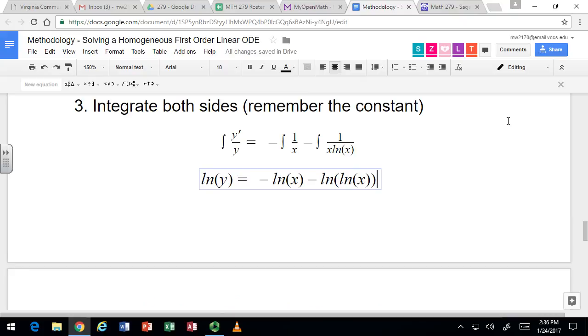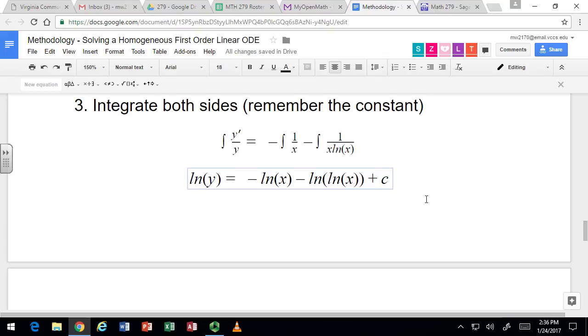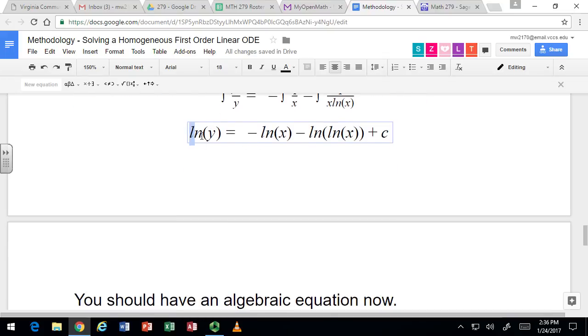And you end up with natural log of natural log of x. As I mentioned before, we do need a constant of integration, so there's a plus c there. So you end up getting lots of e's and natural logs with these methods because of the way you're dividing and integrating. So here's our algebraic equation.